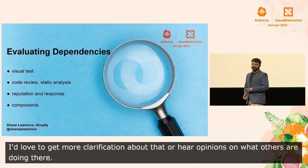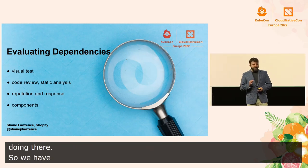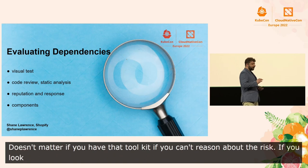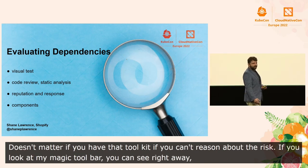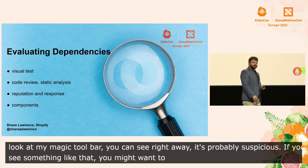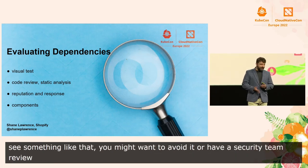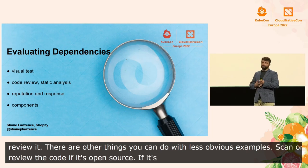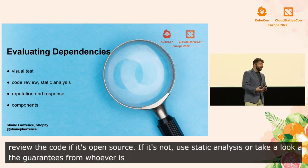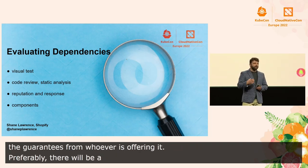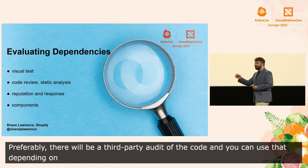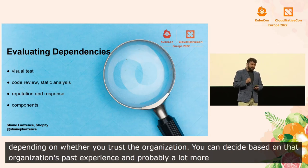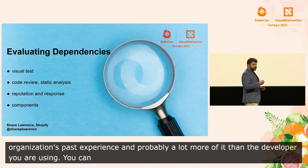We have a great toolkit, but it doesn't matter if you have that toolkit if you can't reason about the risk. If you look at my magic toolbar, you can see right away that it's probably suspicious. So if you see something like that, you might want to avoid it or at least have a trusty application security team review it. But there are other things you can do with less obvious examples. You can scan or review the code if it's open source. If it's not, you can use static analysis or take a look at the guarantees from whoever is offering it. Preferably, there will be some sort of a third-party audit of the code, and you can use that depending on whether you trust the organization.